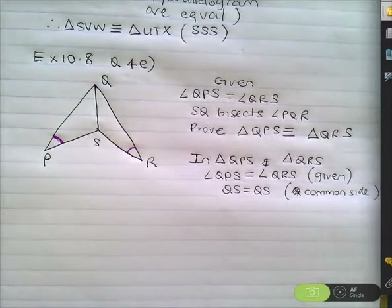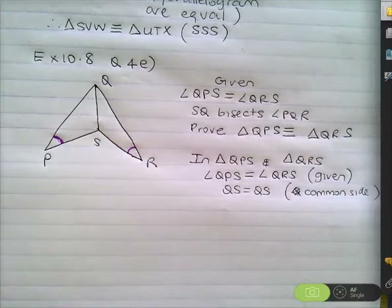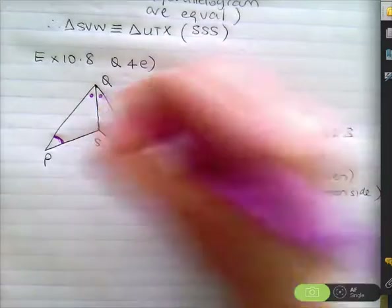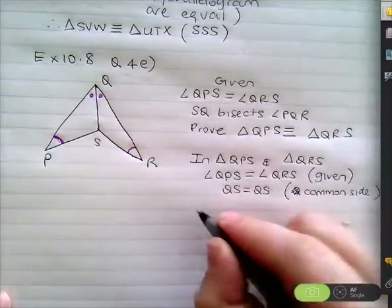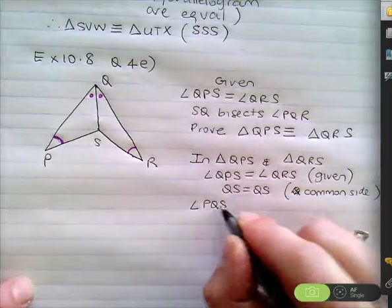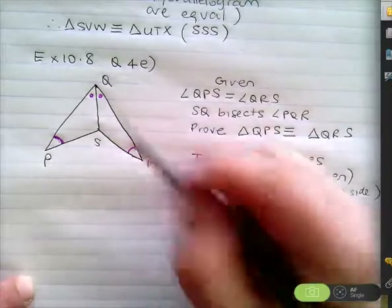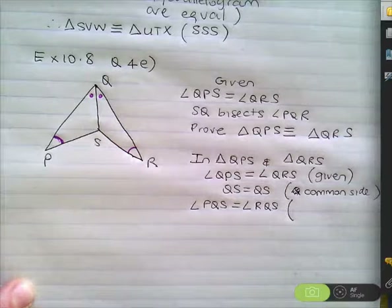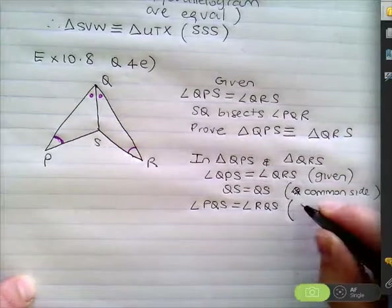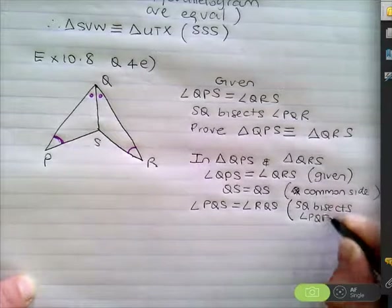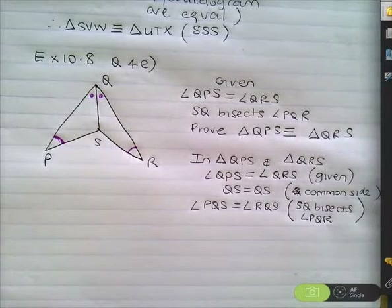They've told us that SQ bisects angle PQR. What does bisect mean? I'm going to put a dot there and a dot there. Angle PQS equals angle RQS. Reason: SQ bisects angle PQR. That's your reason.